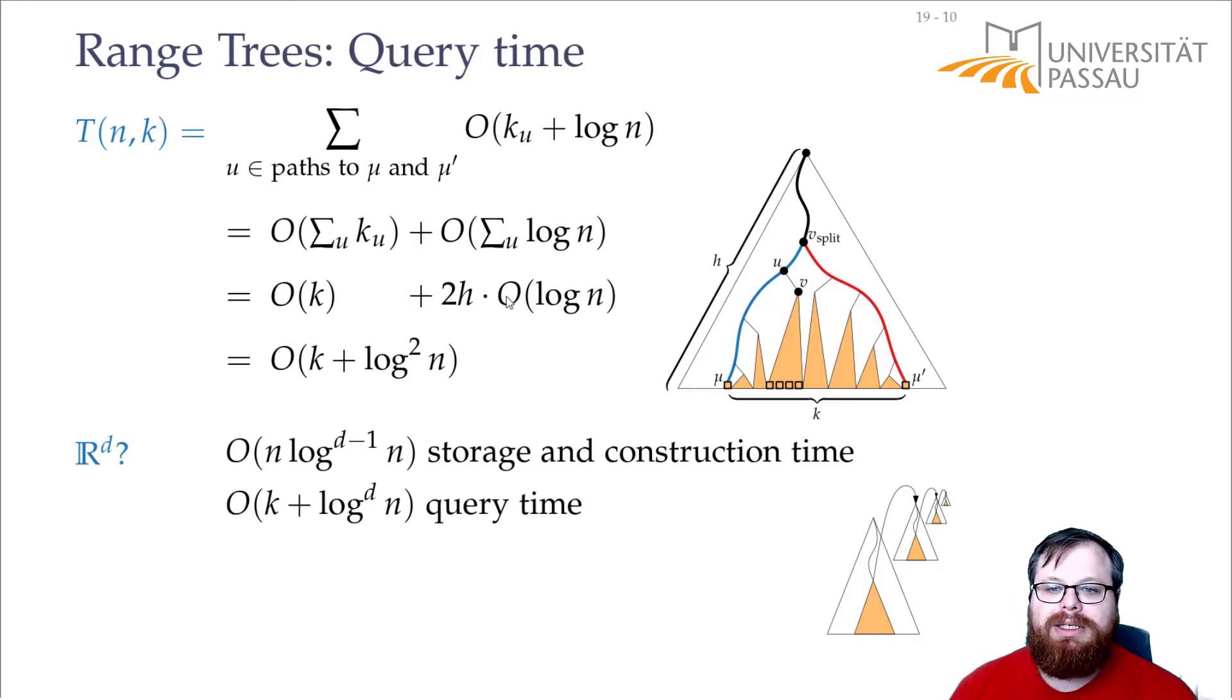And the storage, there we can use the same argumentation as before. Every point in all of these next level trees lies in order of log n next level trees. So we have log n here, for each of them log n here, for each of them log n here. So the number of trees that lies in is log to the d minus 1. So this is our whole storage time, and the construction time takes just as much, because we have to do something for every point that we store.